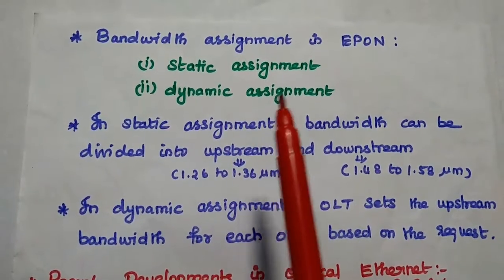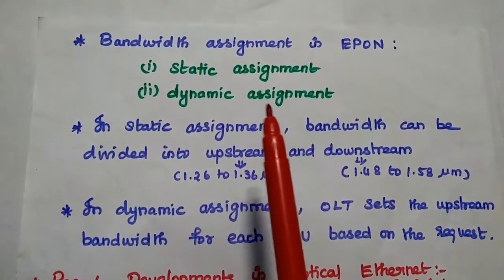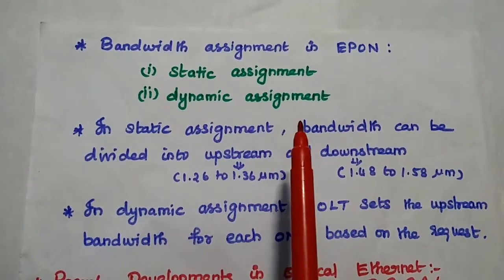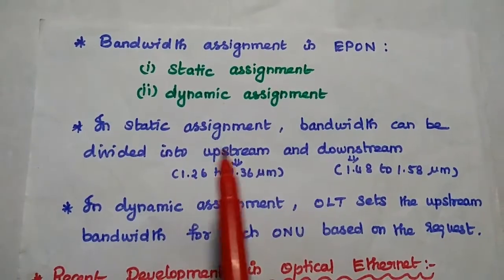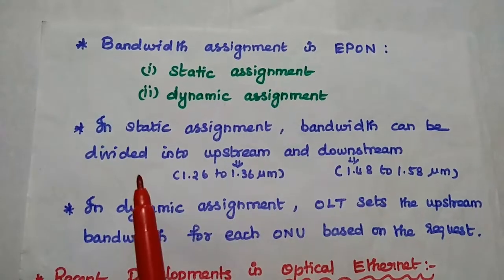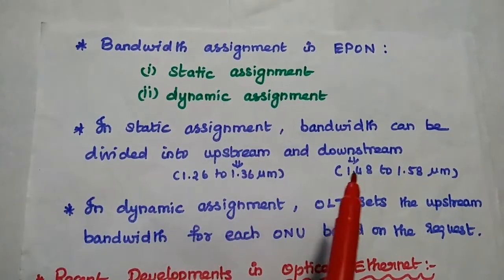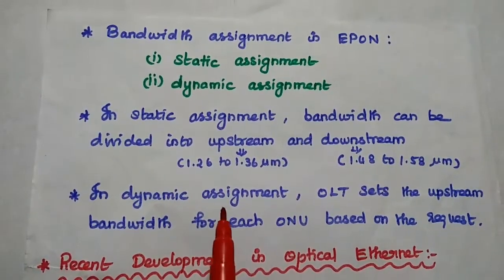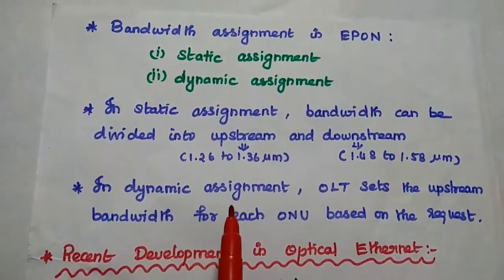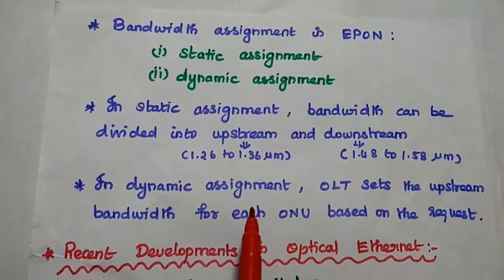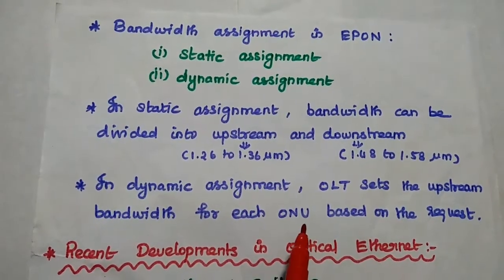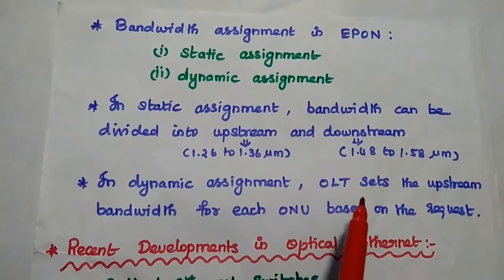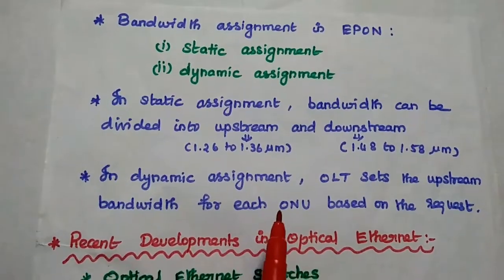In point to multipoint connection, bandwidth assignment can be done in two ways: static assignment and dynamic assignment. In static assignment, bandwidth can be divided into upstream and downstream for each user by default. But in dynamic assignment, based on the request from each ONU, that is optical network user, the OLT, that is optical line termination sets the upstream bandwidth.